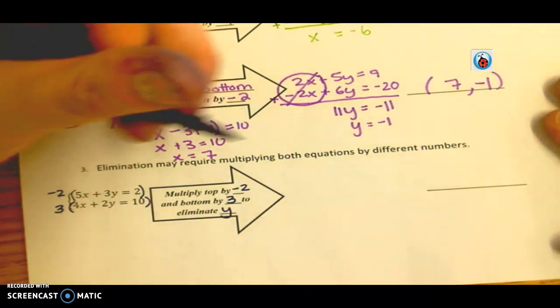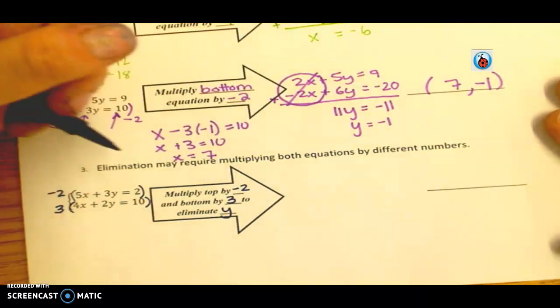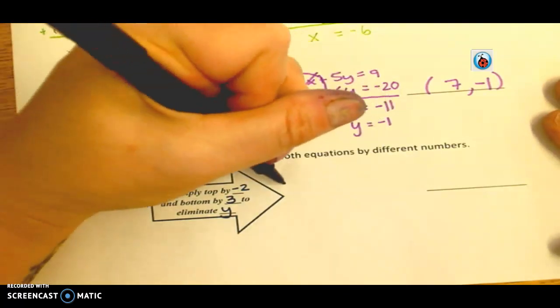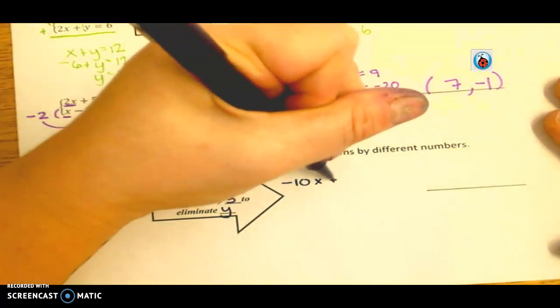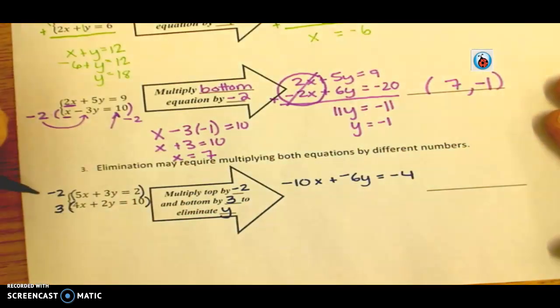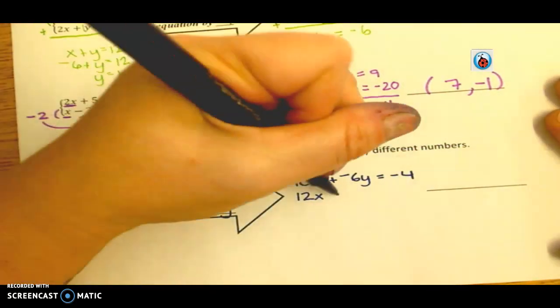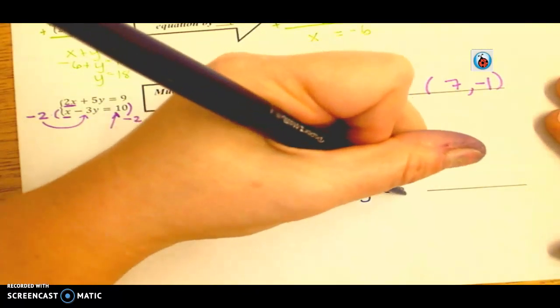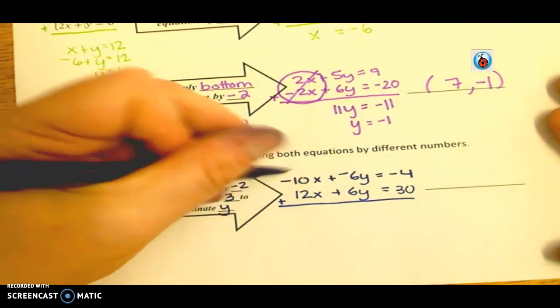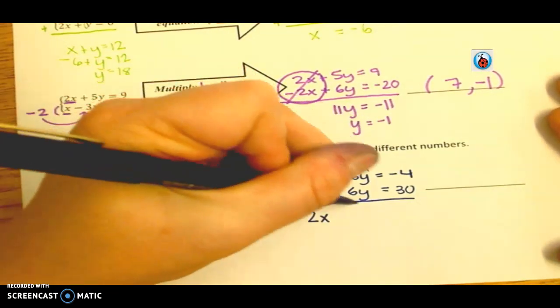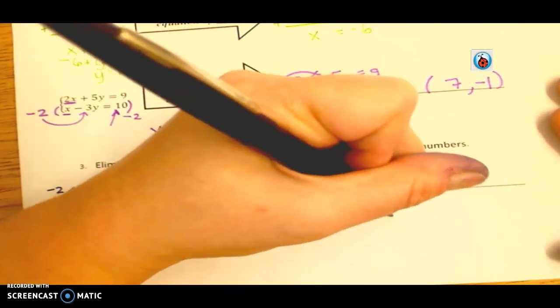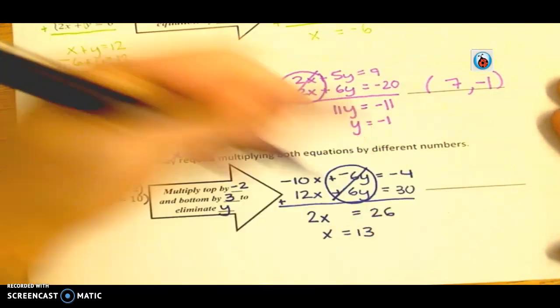So, I'm going to follow through with my work here for eliminating the y's. If you eliminated the x's, totally fine. Go ahead and solve yours and let's see if we get to the same answer. So, I'm going to get negative 10x plus a negative 6y equals negative 4. That's the first equation. And the second equation is 12x plus 6y equals 30. Go ahead and add those together now. Those guys combine to be 2x. These guys are my opposites and create a zero pair. 30 minus 4 is 26. x equals 13.